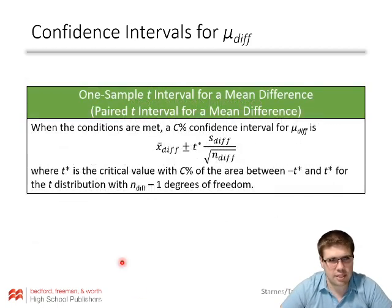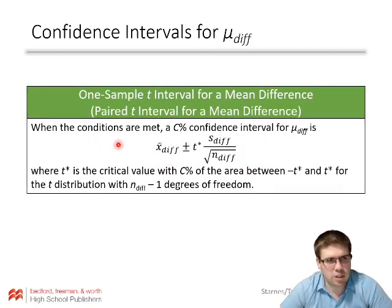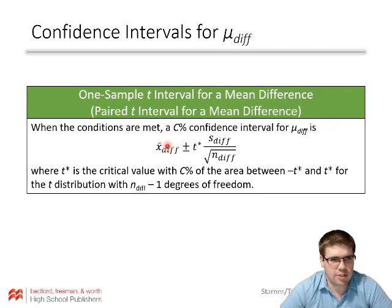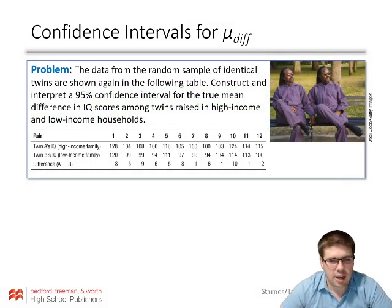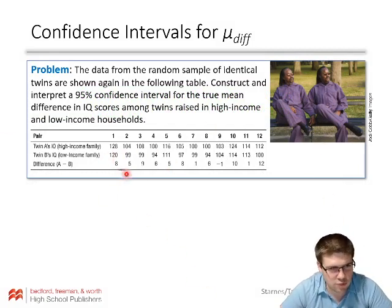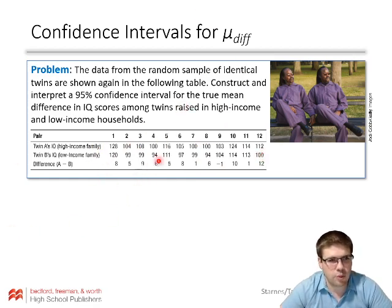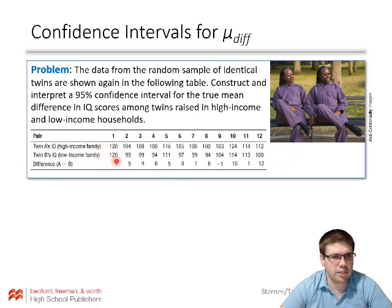To calculate the confidence interval, it's just like our one-sample t-interval — we just do it with differences instead. When conditions are met, a C% confidence interval for mu-diff is: X-bar-diff plus or minus t-star times S-diff divided by the square root of n, where t-star is the critical value with n minus 1 degrees of freedom and n is the number of differences. It would be inappropriate to do a two-sample t-interval since these individuals are related, so we treat the differences as one data set.